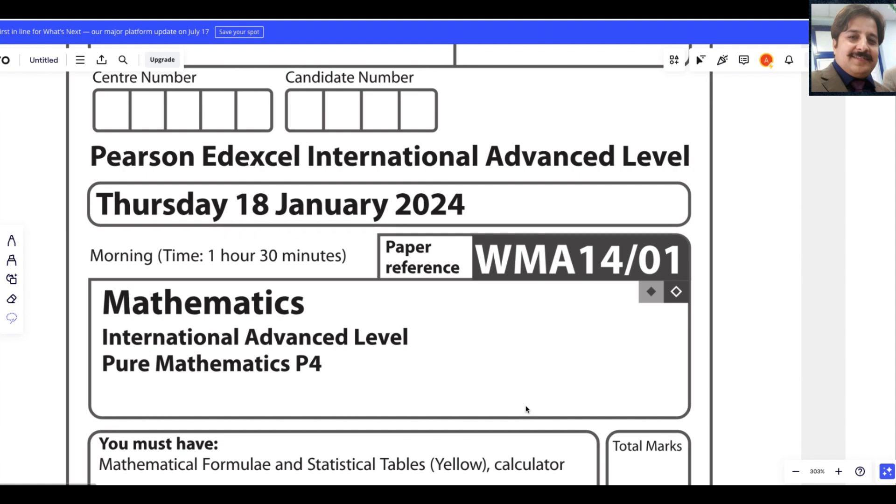Today I will answer a Pearson Edexcel International A-Level exam for Pure Math 4. Its paper reference code is WMA14-01. This exam was taken on Thursday 18th of January 2024.